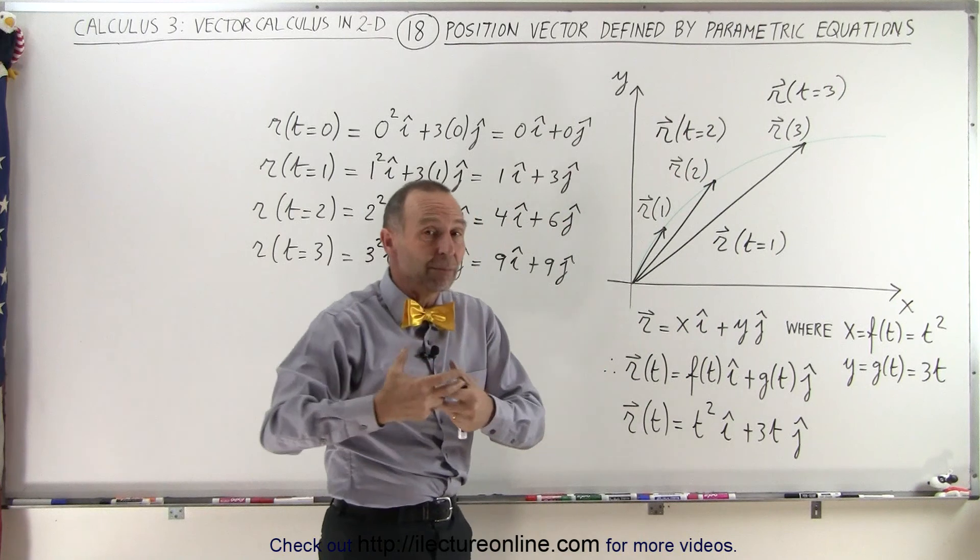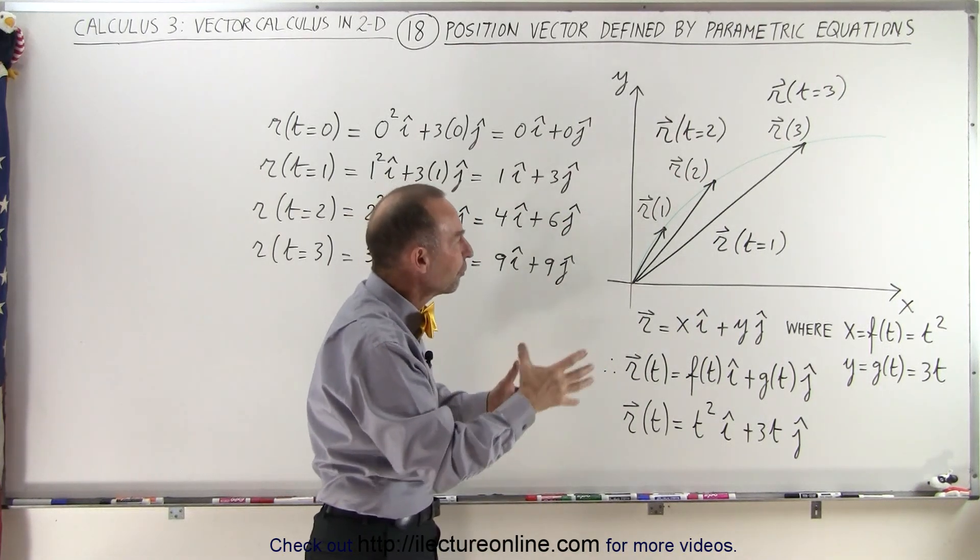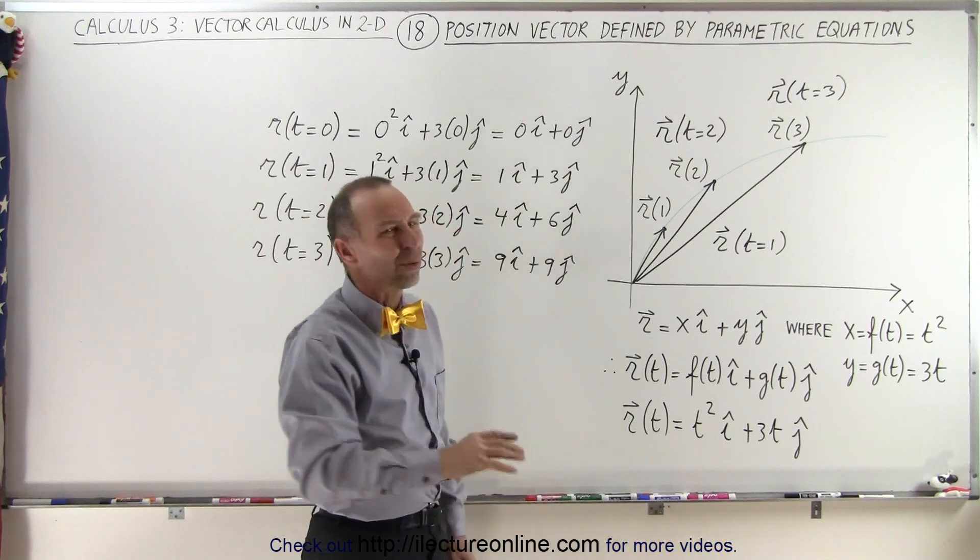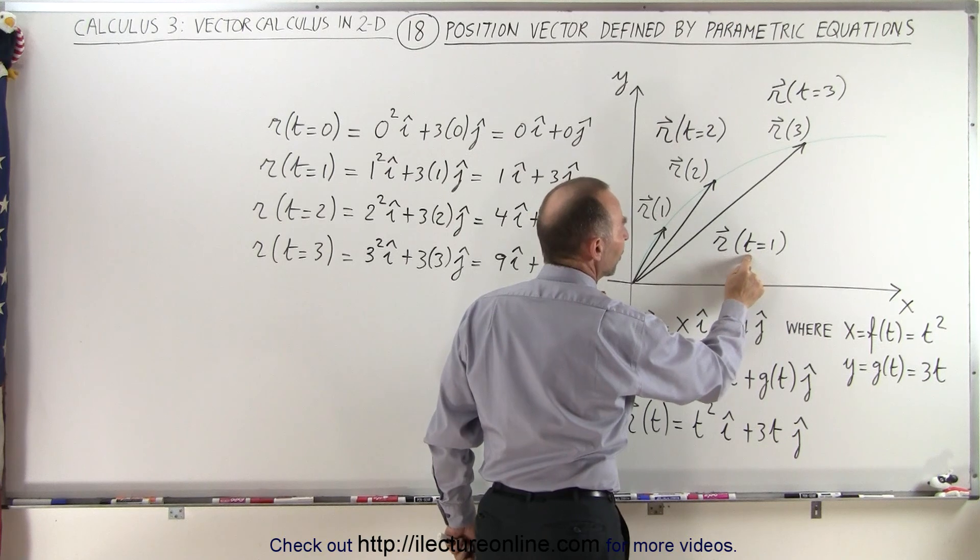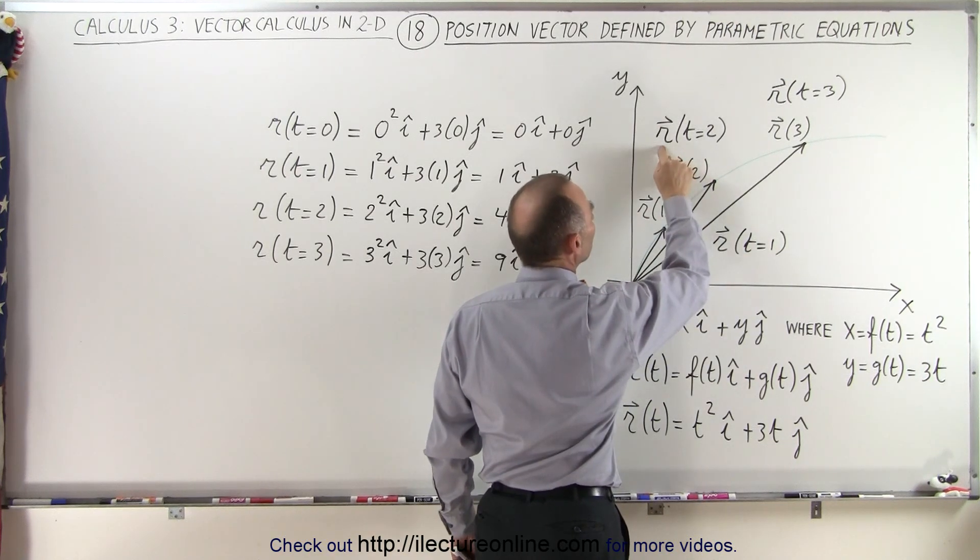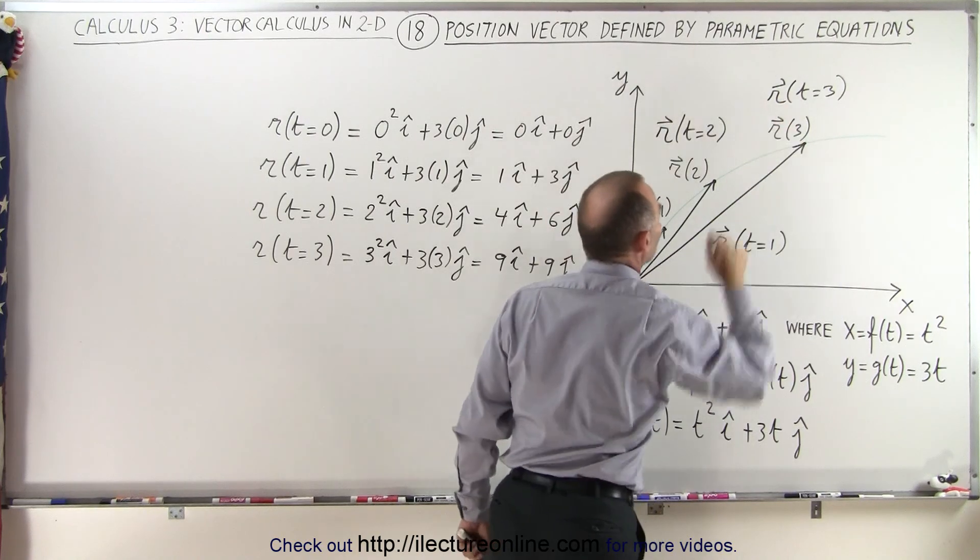you don't always know exactly what the parametric variable is, and you have to go look for it in the text somewhere. So it's always much better when they just simply write it like this. The position vector when the parametric variable equals 1, the position vector when the parametric variable equals 2, and the position vector when the parametric variable equals 3.